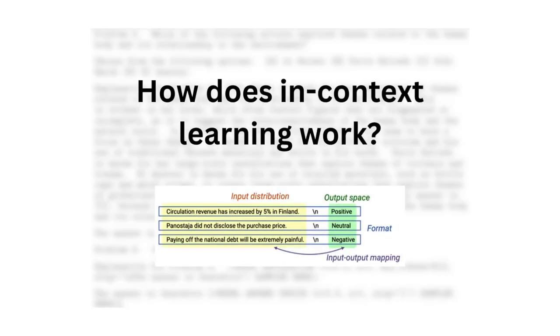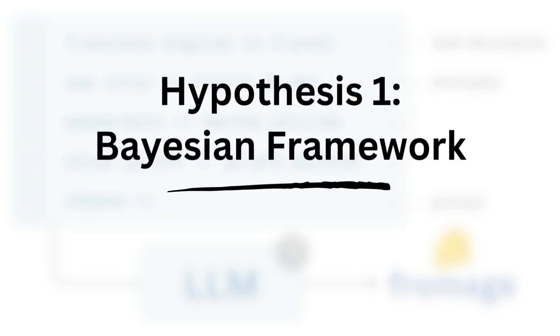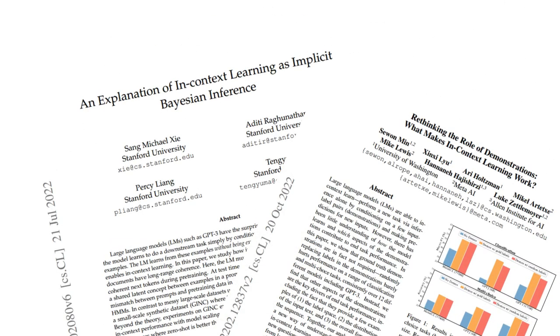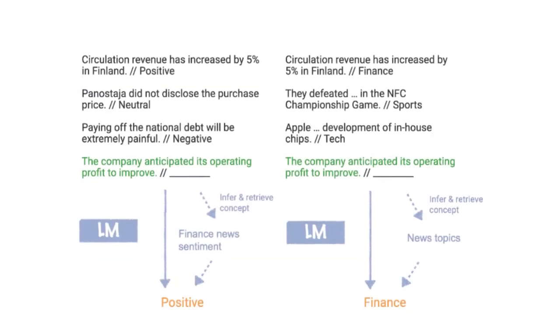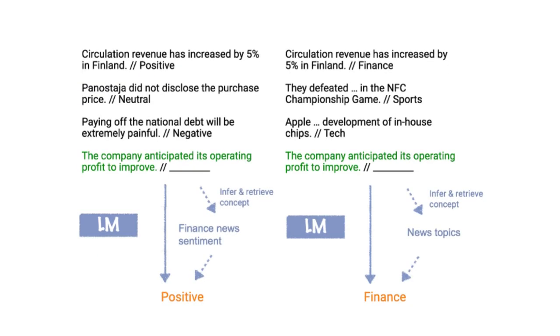So how does in-context learning work, then, if it wasn't explicitly trained for? The first hypothesis that starts to explain this phenomenon is a Bayesian framework built out in 2022. The framework is mainly built up from these two papers from Xie at Stanford and Min from University of Washington. The core idea is that when given a prompt, the language model will infer the latent concepts from the prompt and retrieve the same concept in its pre-training distribution.